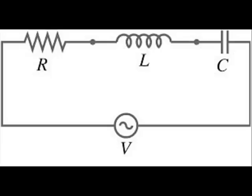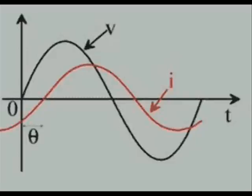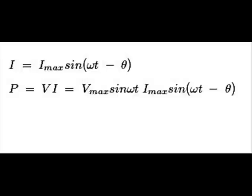Now, coming back to the circuit where the load has all resistance, capacitance, and inductance values — due to the collective effect of these three parameters, the current shifts behind the source voltage by an angle theta, as we have already shown. As the current shifts behind by angle theta, the current waveform can be represented as Imax·sin(ωt − θ). By multiplying the voltage waveform Vmax·sin(ωt) and this current waveform, we get instantaneous power P = Vmax·sin(ωt) × Imax·sin(ωt − θ).